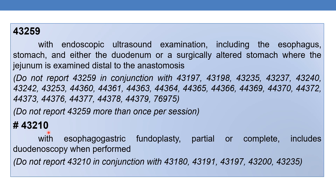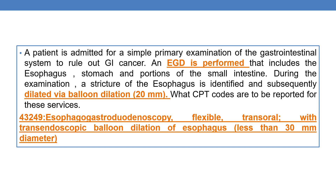The next is 43210: esophagogastroduodenoscopy, flexible, transoral, with esophagogastric fundoplasty, partial or complete, including duodenoscopy when performed. Now let us see an example. A patient is admitted for a simple primary examination of the gastrointestinal system to rule out GI cancer. An EGD is performed — esophagogastroduodenoscopy that includes the esophagus, stomach, and portions of the small intestine. During the examination, a stricture of the esophagus is identified and subsequently dilated via balloon dilation. The dilation is 20 mm. What CPT codes are to be reported for these services?